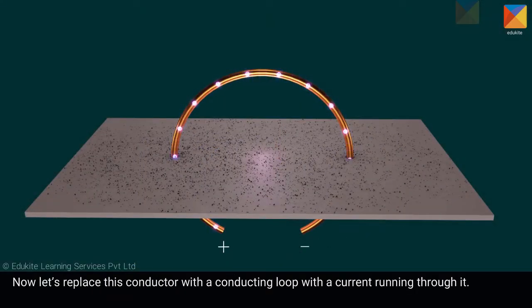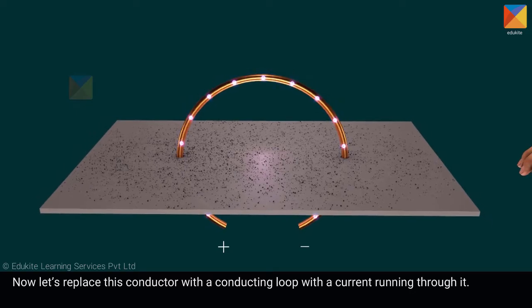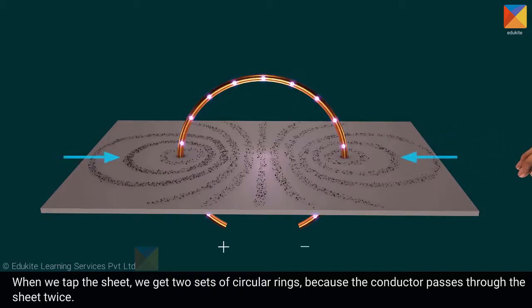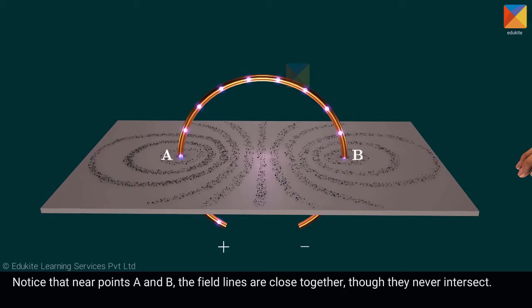Now let's replace this conductor with a conducting loop with a current running through it. When we tap the sheet, we get two sets of circular rings because the conductor passes through the sheet twice. Notice that near points A and B, the field lines are close together, though they never intersect.